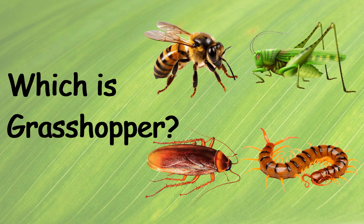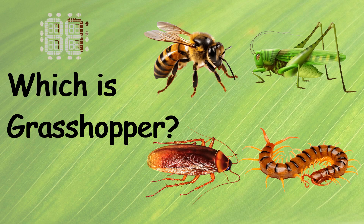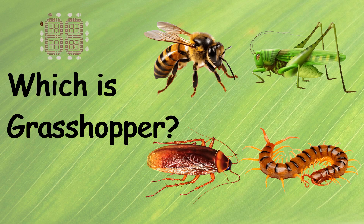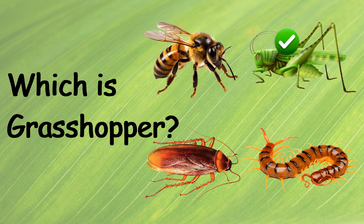Which is Grasshopper? Ten, nine, eight, seven, six, five, four, three, two, one, zero. This is the right one.